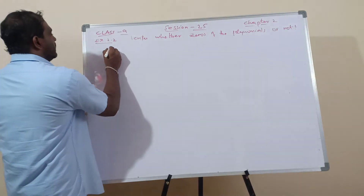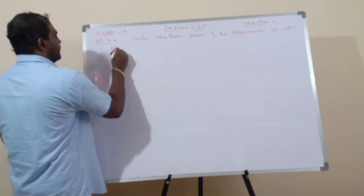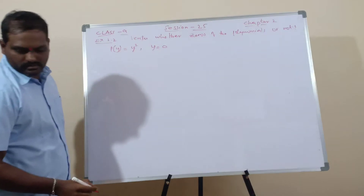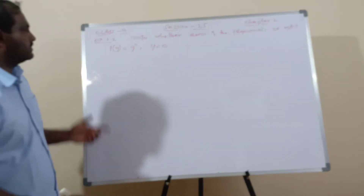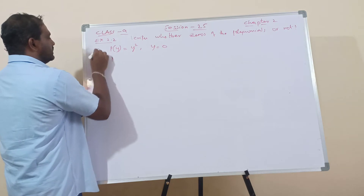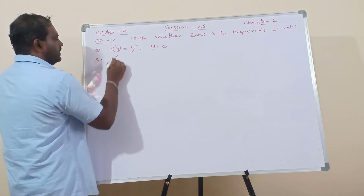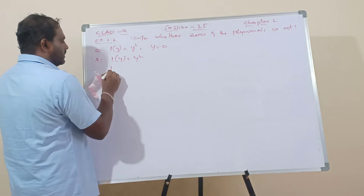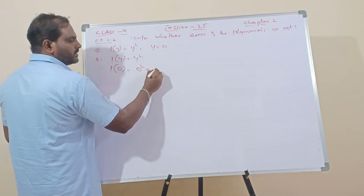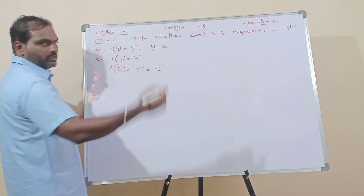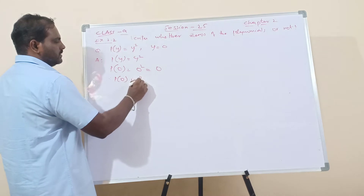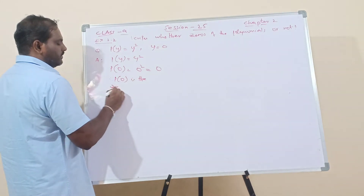Question 5 is very simple. Given: p of y equals y squared, and y equals 0. Simply, p of 0 equals 0 squared, which is 0 into 0, which is 0. Therefore p of 0 is the zero of the polynomial.